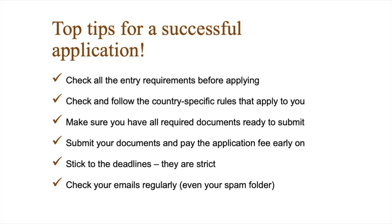First, start by making sure you've checked all entry requirements before applying — both the general requirements and the program-specific requirements — and remember to check any country-specific rules that apply to you. Then make sure you have all required documents ready to submit, including proof of English language proficiency and any program-specific documents required. It is highly recommended to submit your documents and pay the application fee or submit proof of exemption early on. Do not miss the deadlines — they are strict. Finally, check your emails regularly, as you may receive messages from the admissions officers and will receive emails from the international marketing recruitment team throughout the process. It could also be a good idea to keep an eye on your spam folder, just in case.